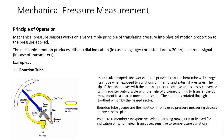Starting with the mechanical pressure measurement principle of operation: mechanical pressure sensors work on a very simple principle — they translate pressure into a physical motion that is proportional to the pressure applied.